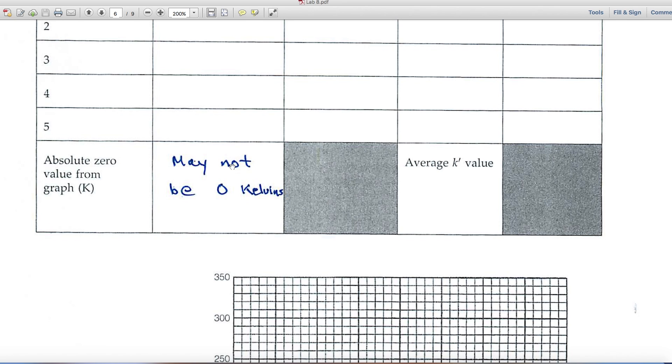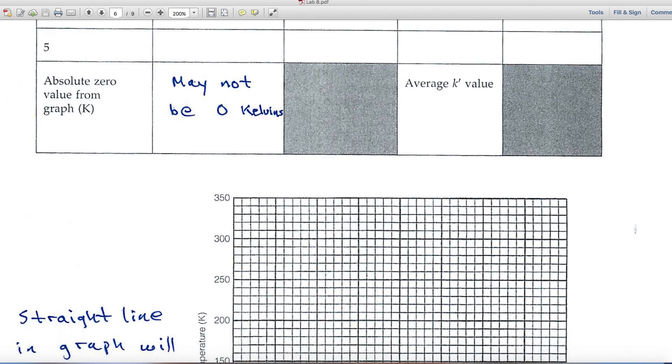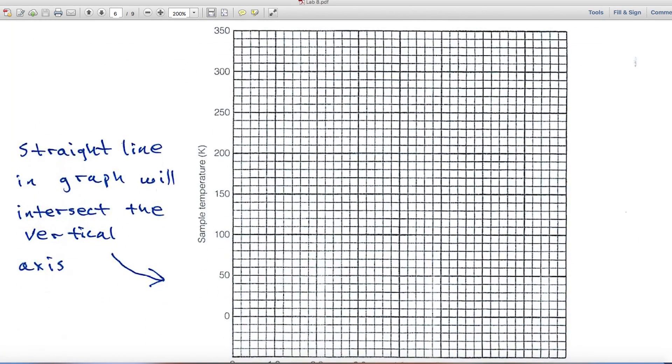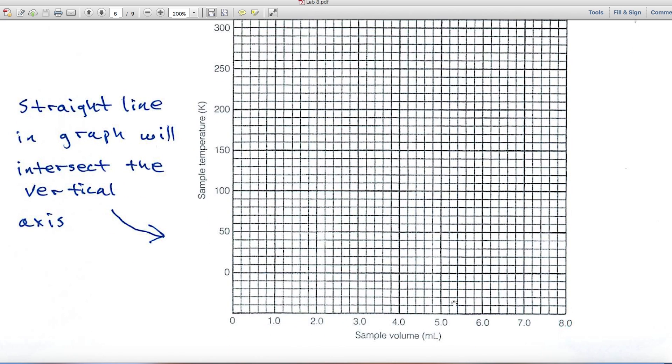And this is how the grader knows whether you're fudging or not. If you put down zero Kelvins, chances are you've fudged your data. Here's the graph where you'll calculate K. And the horizontal axis is the sample volume. The vertical axis is the temperature. Theoretically, when the sample volume reaches zero, you're at absolute zero as well on this scale.